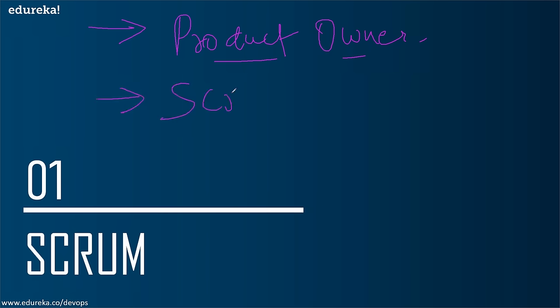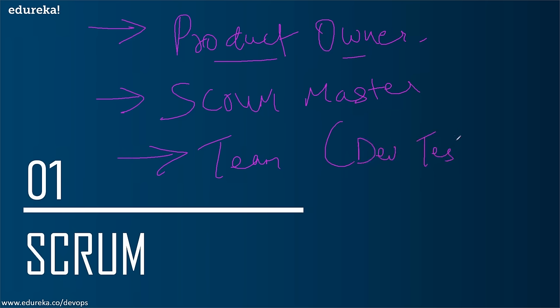Then there is the Scrum Master — someone you would traditionally call a team leader or project owner. The Scrum Master is right below the product owner and handles day-to-day operations like running meetings and planning tasks. Then you have the team itself, consisting of developers and testers. So you have three roles: manager (product owner), team leader (Scrum Master), and the team — but how is this different from a traditional office?